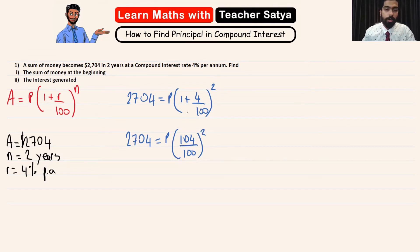So we have 2704 = P × (104/100)^2, and we got 104 because we found the lowest common multiple. Now let's see if we can simplify this. We see that both of these can divide by 4, so this will change to 26 and this will change to 25.